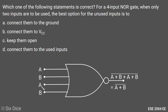Option D: Connect the unused inputs to the used inputs. The first two inputs are A and B, and we connect the remaining two to A and B as well. The output becomes the complement of A plus B plus A plus B. Both A's combine to a single A and both B's combine to a single B, giving the output as the complement of A plus B — the same result as Option A.